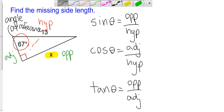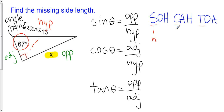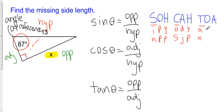One way to remember this is a helpful word — SOH CAH TOA. The first letter in each group refers to the trigonometric ratio: SOH refers to sine, CAH refers to cosine, and TOA refers to tangent. The O, H, and A refer to opposite, hypotenuse, and adjacent. So sine is opposite over hypotenuse, cosine is adjacent over hypotenuse, and tangent is opposite over adjacent. This little word might help you remember these three primary trigonometric ratios.